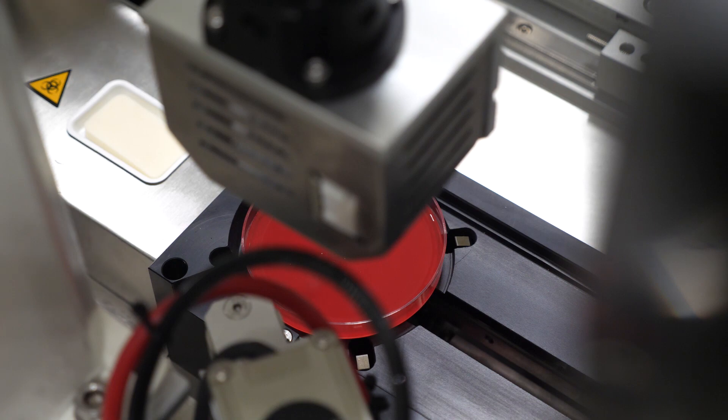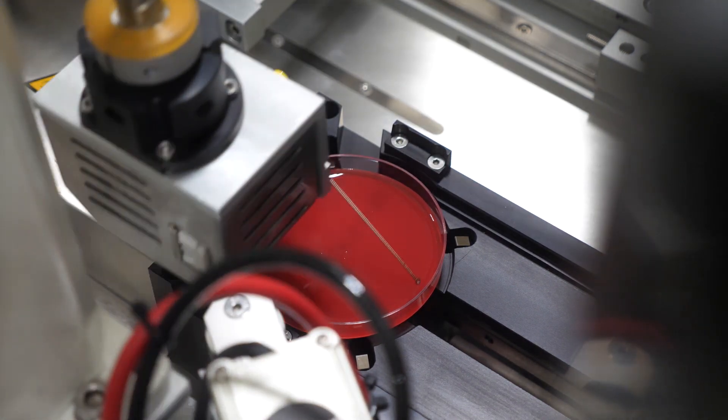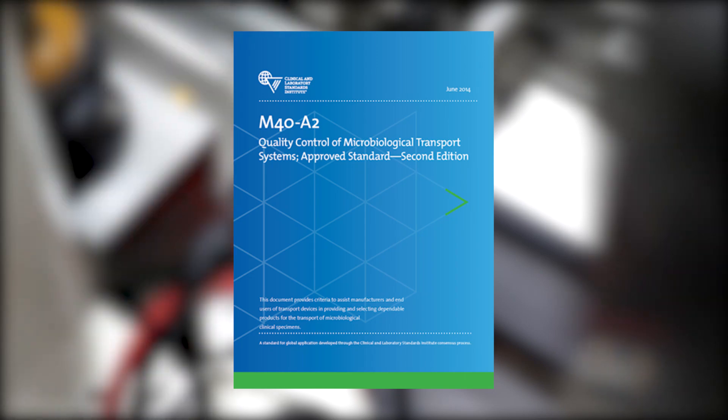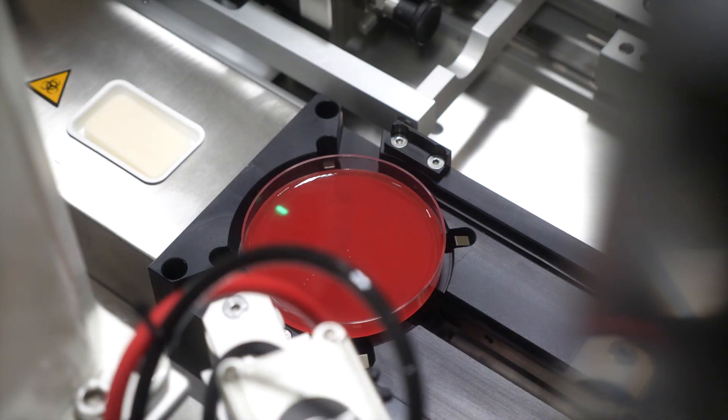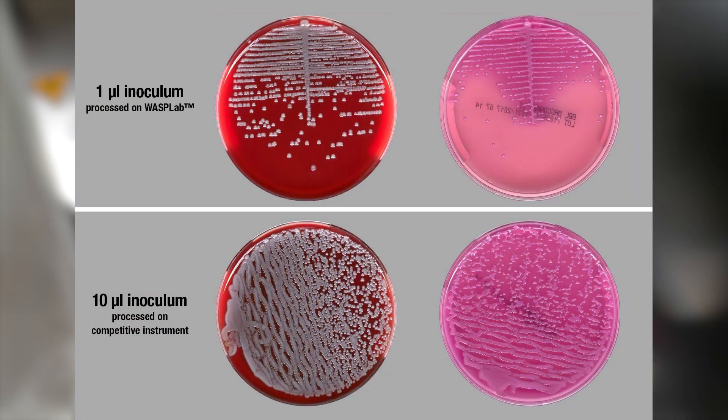The flexible loop inoculation system delivers a 1-microliter inoculum for urine samples as recommended in the ASM Manual of Clinical Microbiology and other reference standards. Competitive pipette systems are limited to a minimum 10-microliter inoculum, which can result in plate overgrowth.